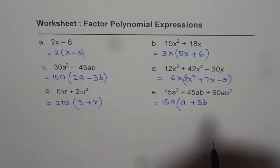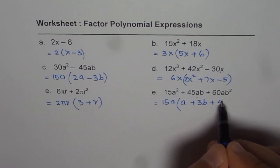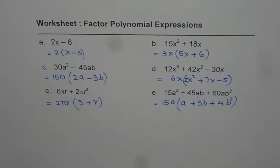15 times 3 is 45, so plus 3b. 15 times 4 is 60, so plus 4b squared. That is how we can factorize this part.